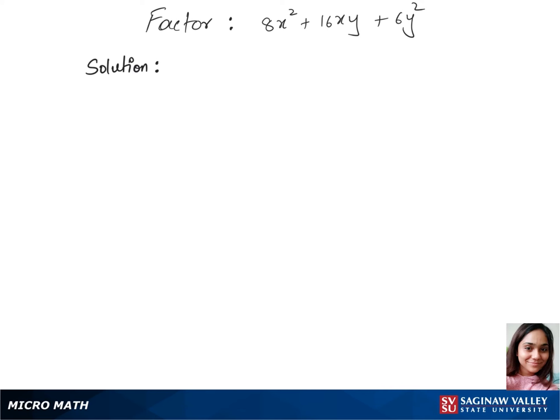Let's factorize this trinomial. We'll first bring out 2 from this, so that's 2 times 4x² plus 8xy plus 3y². Now we can find factors for 4x² and also 3y².